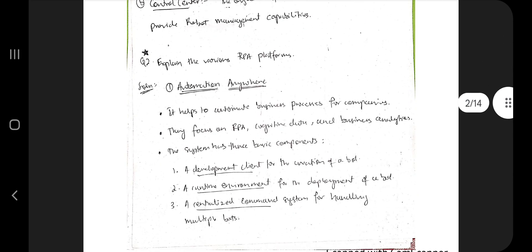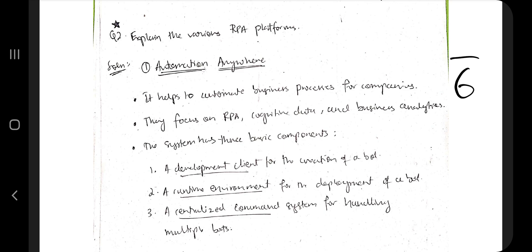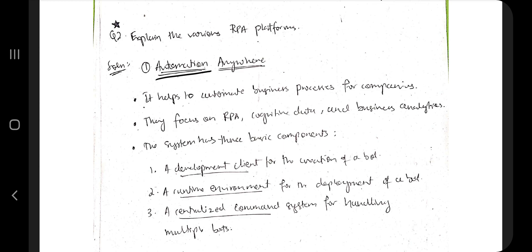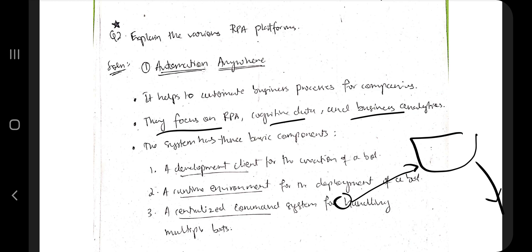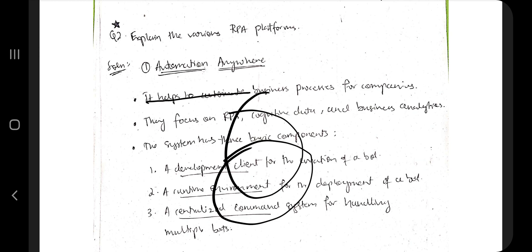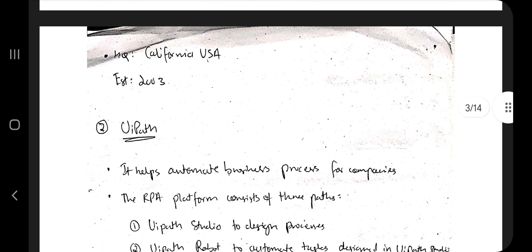The next important question is to explain the various RPA platforms. There are six RPA platforms — these are the names of different companies using RPA. The first one is Automation Anywhere. All of these have the same features with slight word differences. The key line to remember: it helps to automate business processes for companies. Automation Anywhere focuses on RPA and data — they analyze trends, automate processes, reduce time, and increase efficiency. They have a development studio, control center, client manager, and a robot.